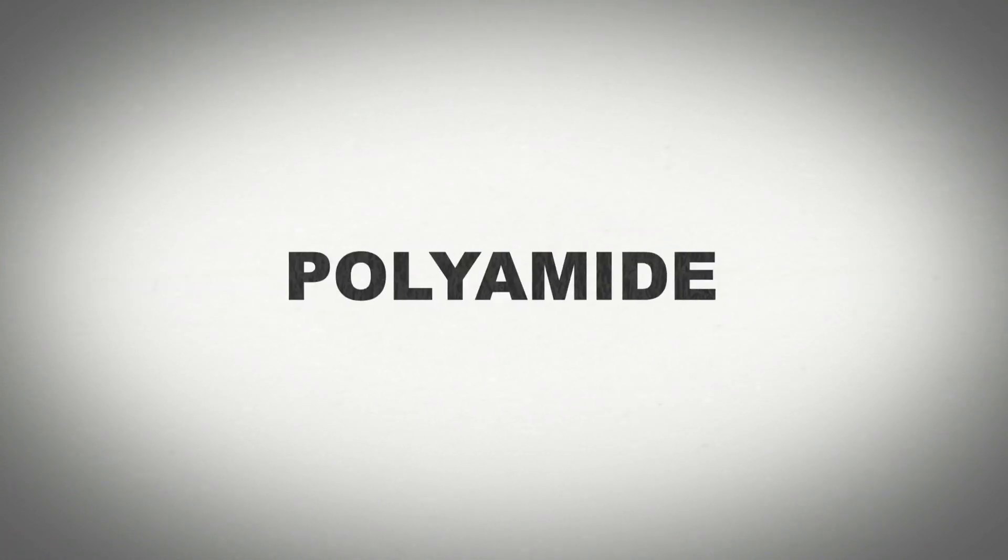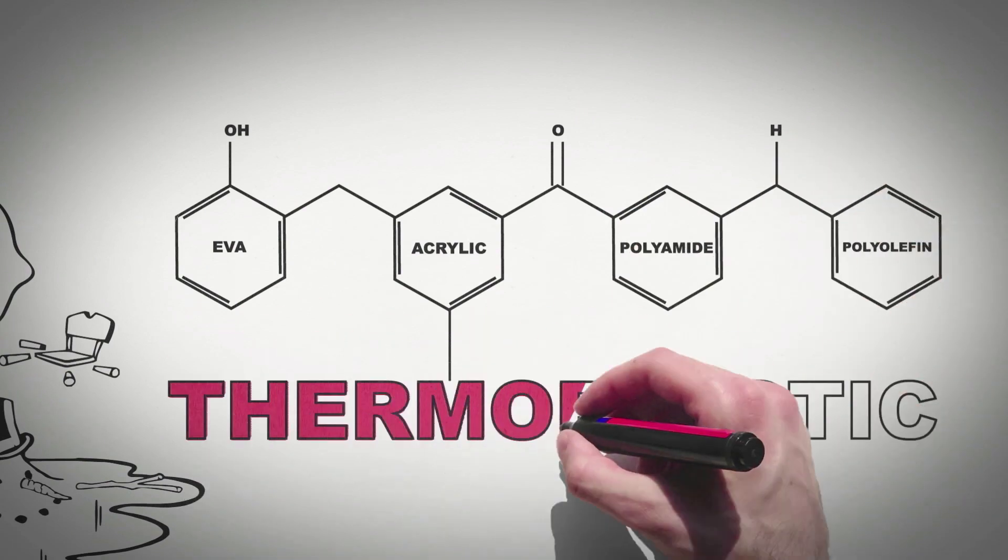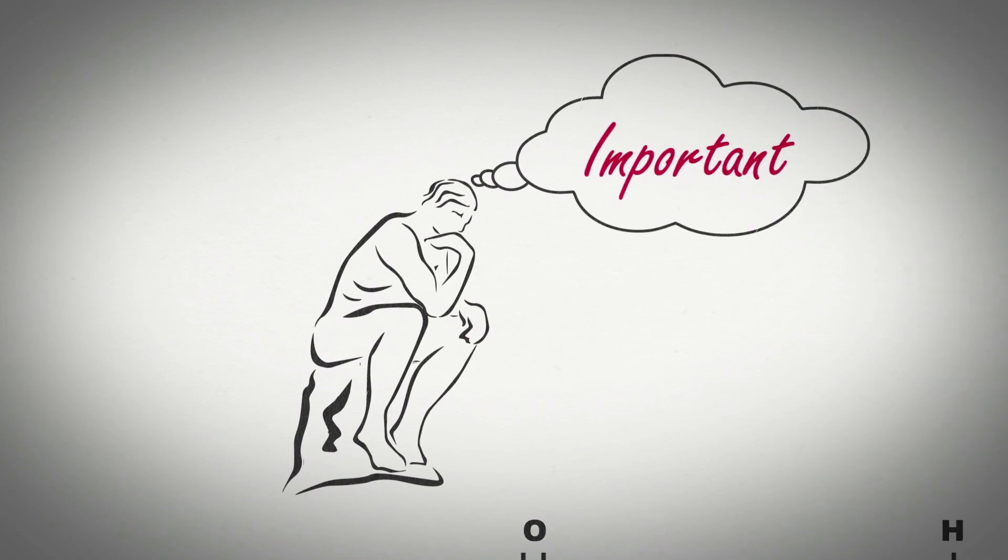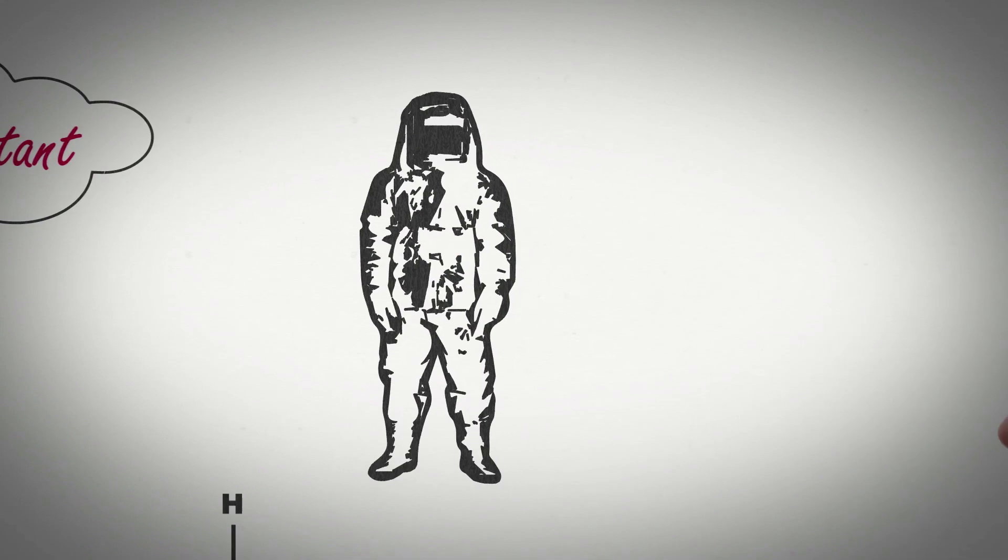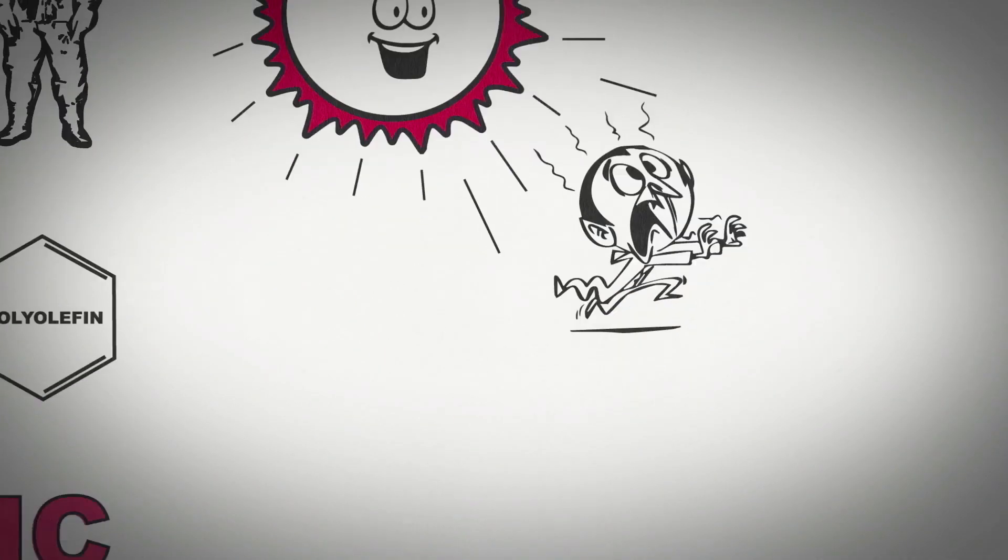Hot melt adhesives such as EVA, acrylic, polyamide, and polyolefin are thermoplastic products and melt with heat and set solid by the loss of heat. This is an important fact to consider when selecting a grade. Do you need a high heat resistance? Will the glue line be exposed to heat or direct sunlight? What about water?